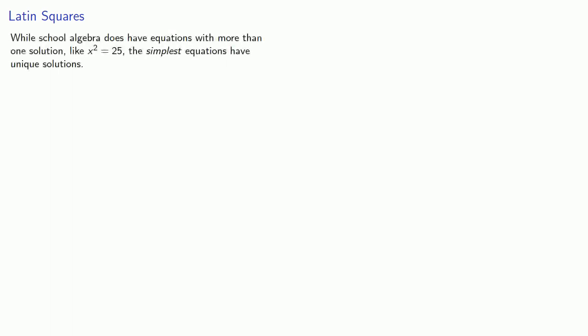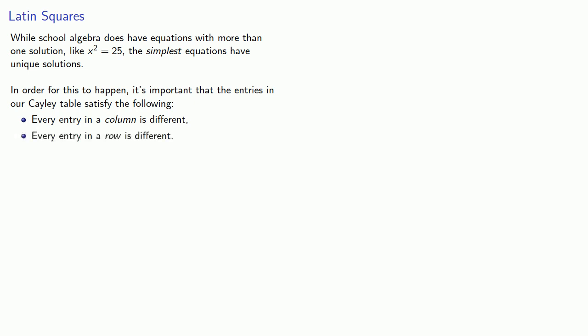Now, while school algebra does have equations with more than one solution, for example, X squared equals 25, we're used to the idea that the simplest equations have unique solutions. In order for this to happen, it's important that the entries in our Cayley table satisfy the following. Every entry in a column is different, and every entry in a row is different.